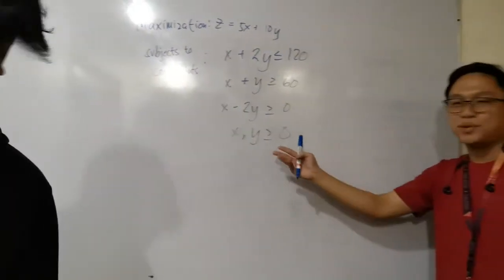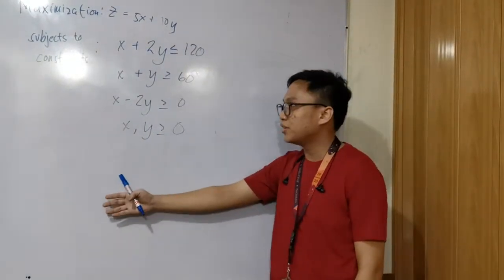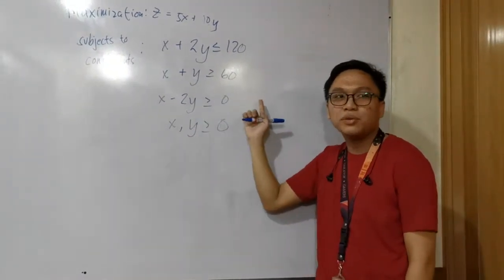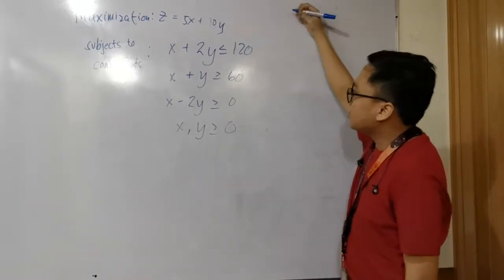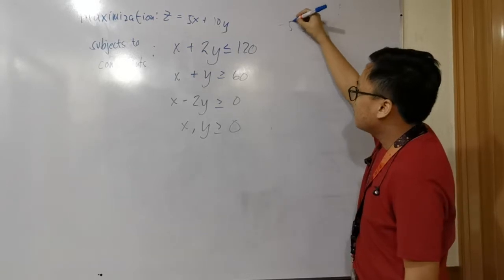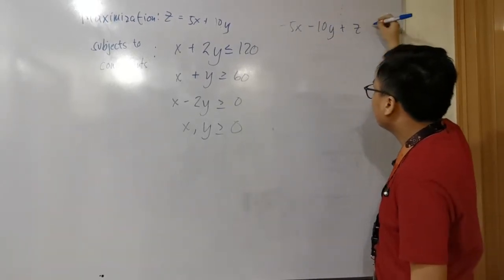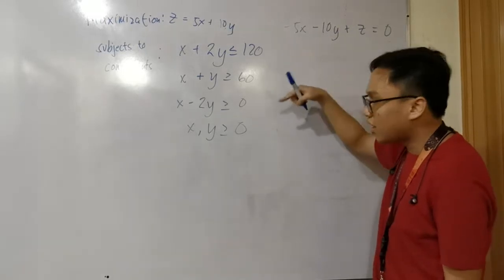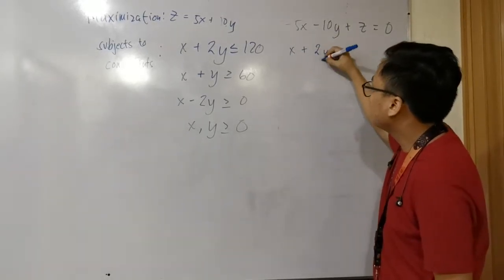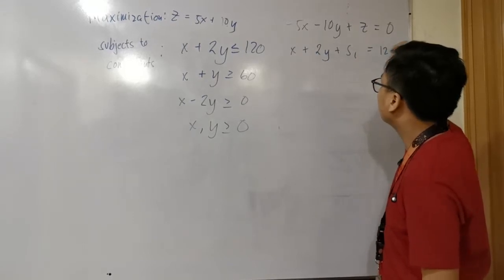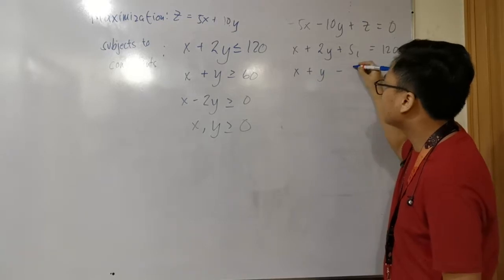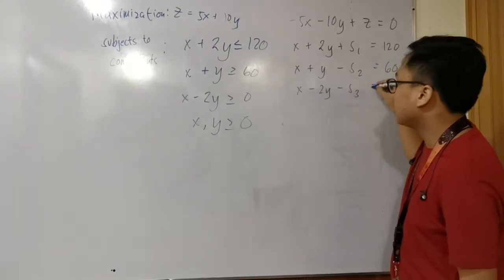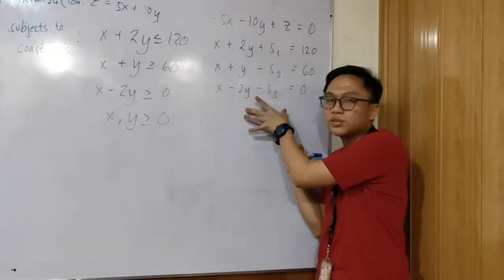For an example of what multiple optimal solution is, this is our problem. To solve it using multiple optimal solution, we do it basically the same as how we solve it using the simplex method. In maximization z, we turn that into negative 5x minus 10y plus z equals zero. The constraints will have slack or surplus variables added: x plus 2y plus s1 equals 120; x plus y minus s2 equals 60; x minus 2y minus s3 equals zero.